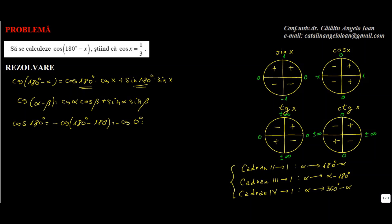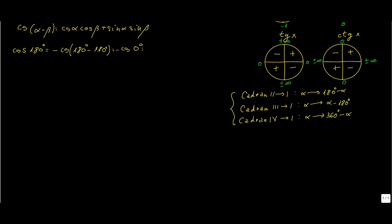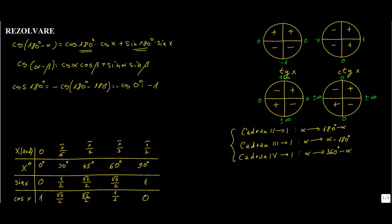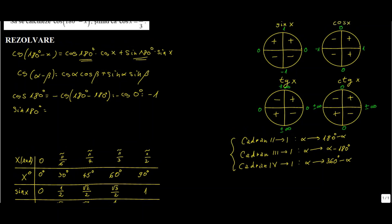Adică egal cu minus cosinus de 0 grade. Cât face cosinus de 0 grade? Ne uităm în tabelul de valori al funcțiilor trigonometrice și observăm că cosinus de 0 grade este 1, și cu minusul din față, minus 1. Ce mai aveam? Aveam sinus de 180 de grade. Analog, sinusul în cel de-al doilea cadran este pozitiv, deci este plus sinus, și avem aceeași regulă de transformare: 180 de grade minus 180 de grade egal cu sin de 0 grade.